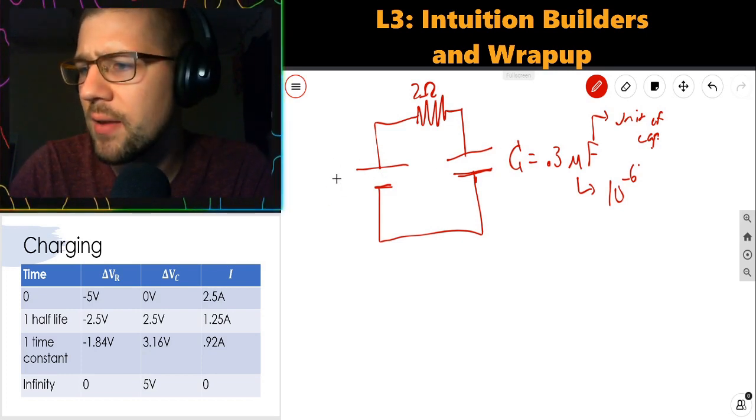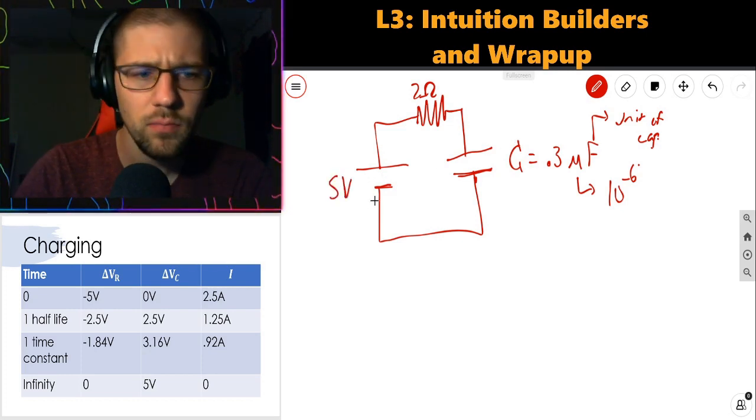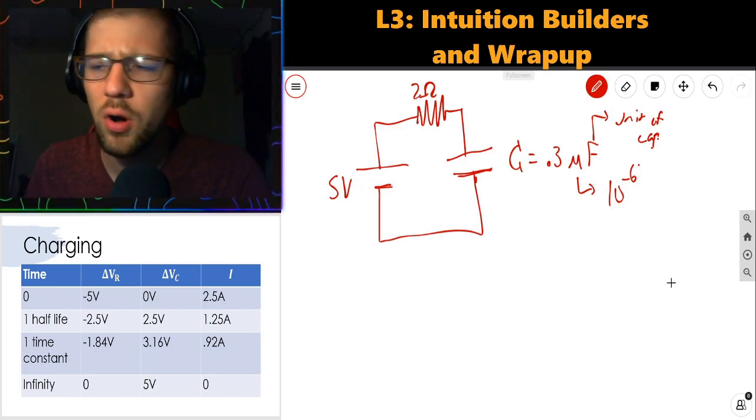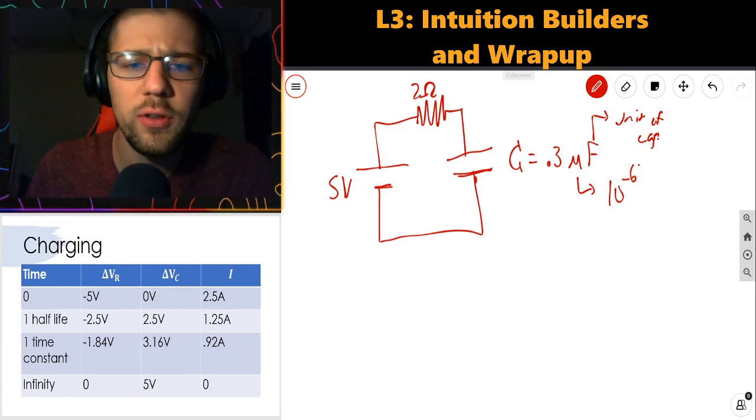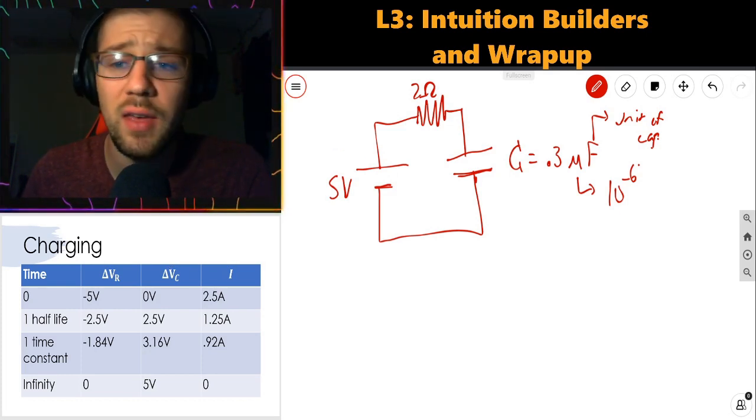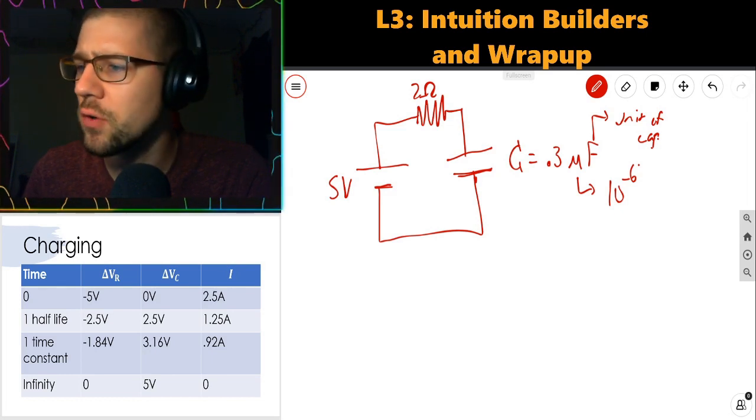And let's say that the battery has a voltage of 5 volts. So I've made a little table for how the voltage across the resistor, the voltage across the capacitor, and the current through the system will change over time.